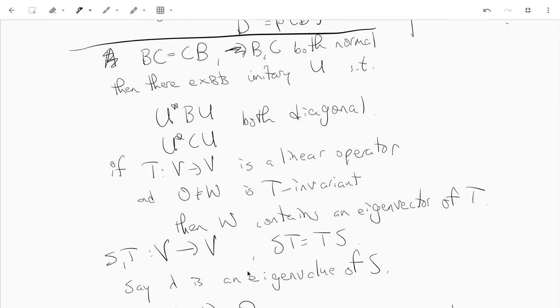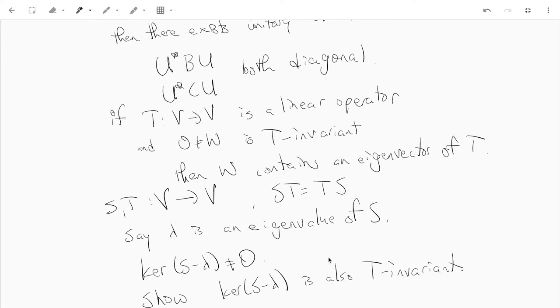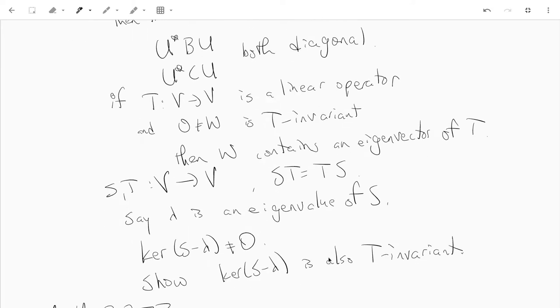And using this, you can show that if S and T are commuting operators and λ is an eigenvalue of S, then kernel of (S - λI) is non-zero and is a T-invariant subspace.